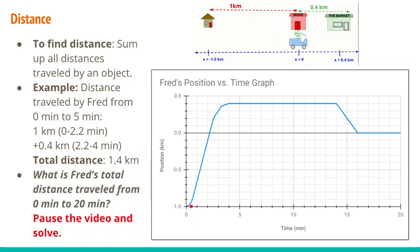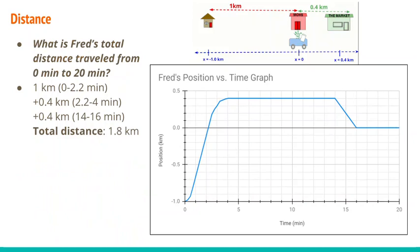What is Fred's total distance from 0 minutes until 20 minutes? Pause the video and solve. We already figured out the distance up to 5 minutes was 1.4 kilometers, so you just need to figure out how far he went for the rest. The total distance he traveled was 1.8 kilometers: 1 kilometer from house to school, 0.4 kilometers to the store, zero while stopped, and 0.4 kilometers back to school — so 1.4 plus 0.4 equals 1.8 kilometers.